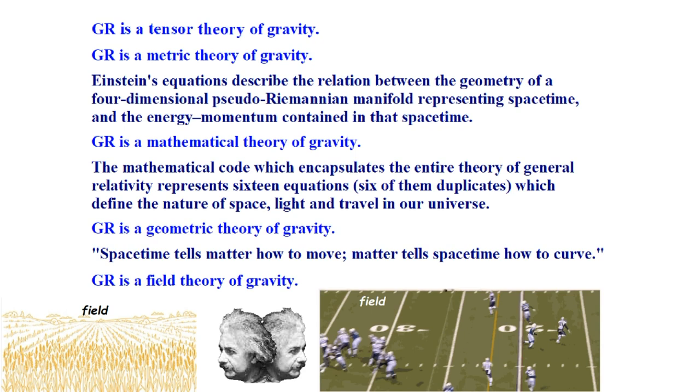It's also a field theory of gravity — though I don't know what kind of field. So we've got to look at this word 'field' because it underlies all these concepts. We need to get to the bottom of what general relativity is about. They say it's a field theory, a tensor theory, a mathematical theory. None of those are physical objects. We want to know what kind of physical object underlies the theory, because they're going to talk about a mechanism of gravity.